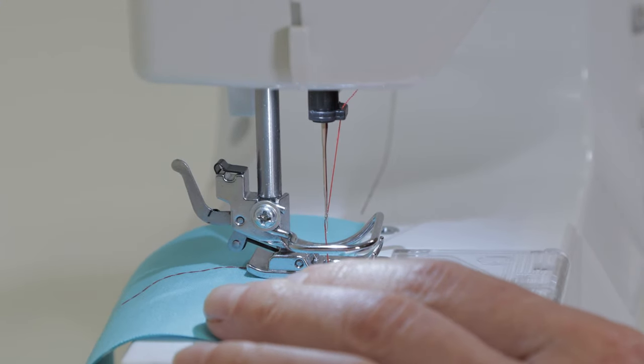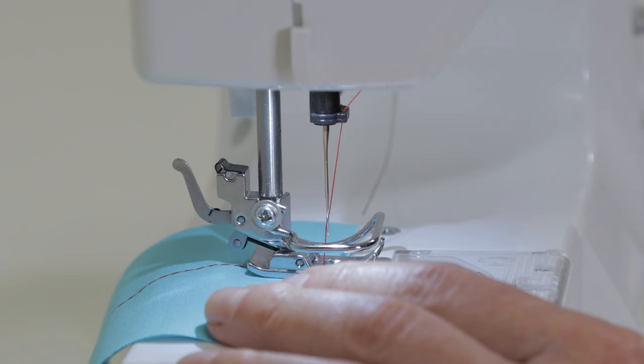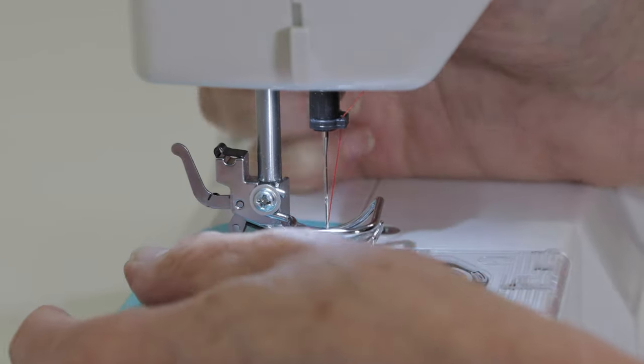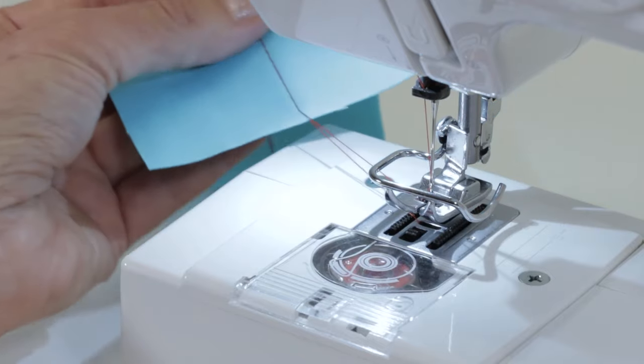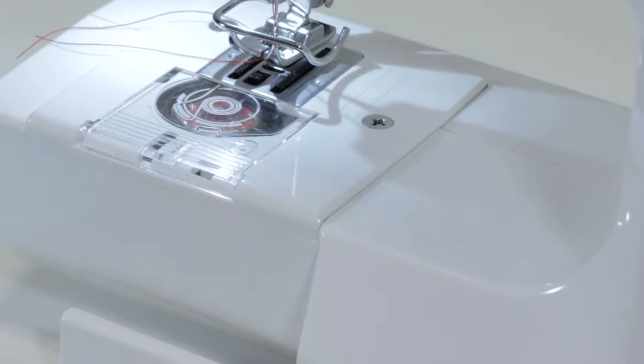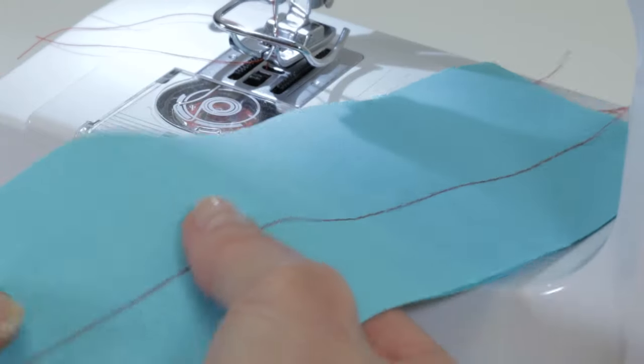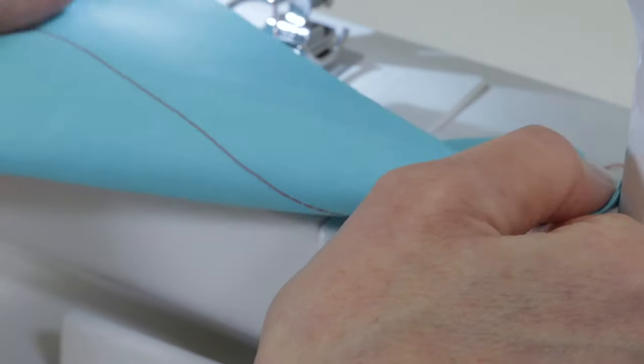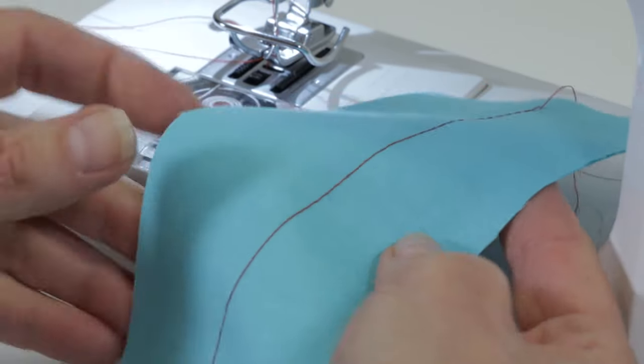When you come to the end of the fabric, continue turning the hand wheel toward you until the needle is all the way up and just starts to come down. Raise the presser foot lifter and bring your work over to the side and trim your threads with the thread cutter. Here's our stitch, it looks good on the top and it looks good on the back, so it means we've threaded the machine correctly.